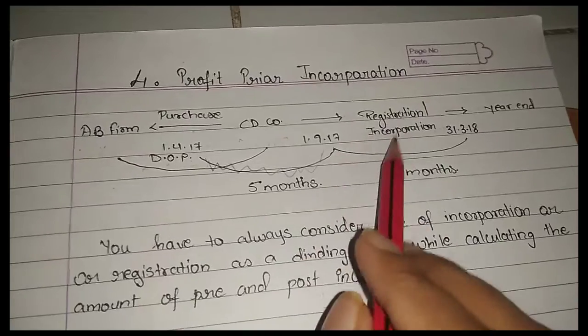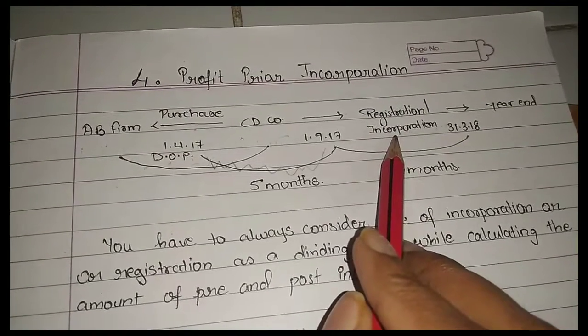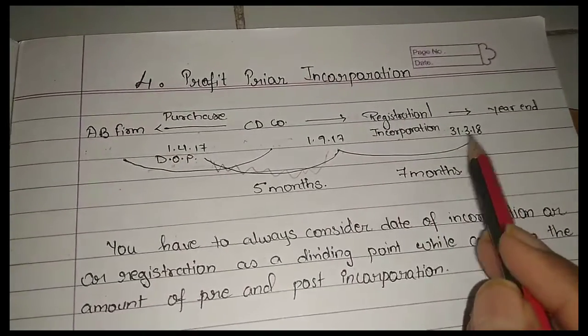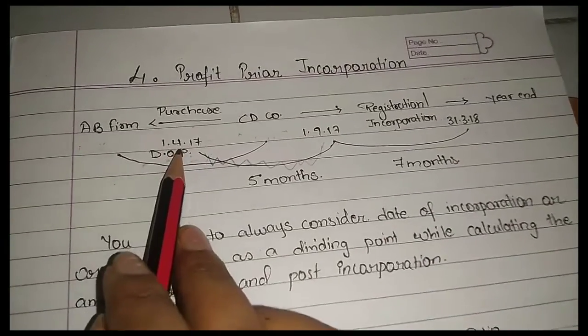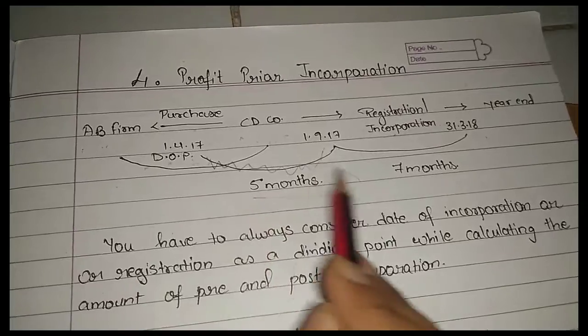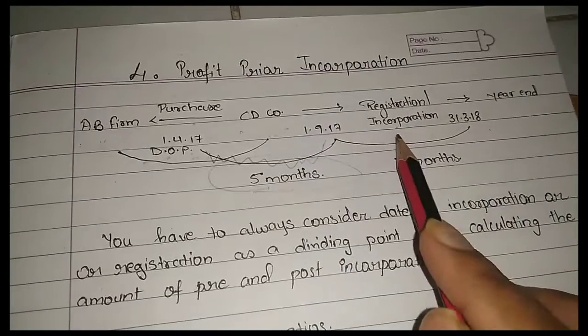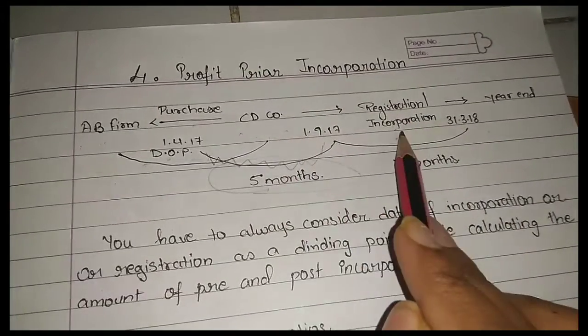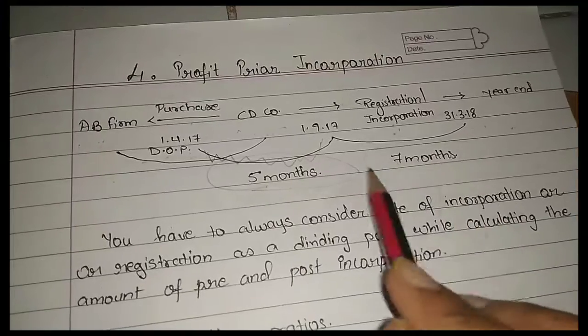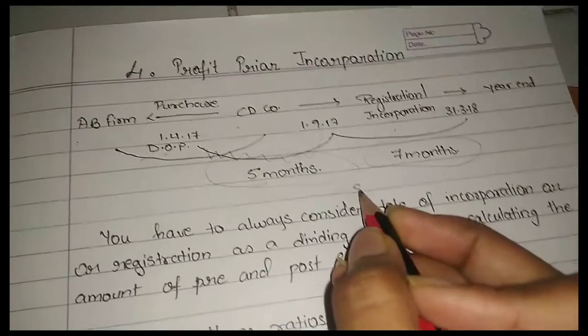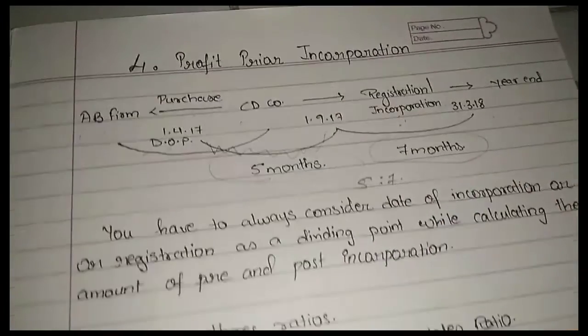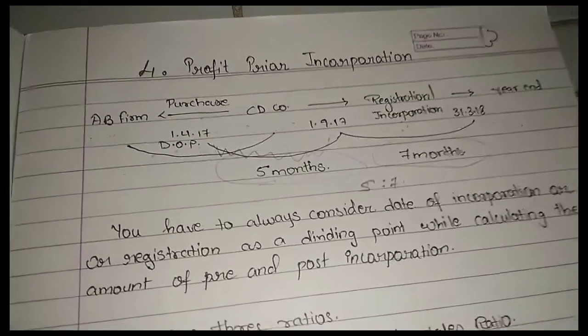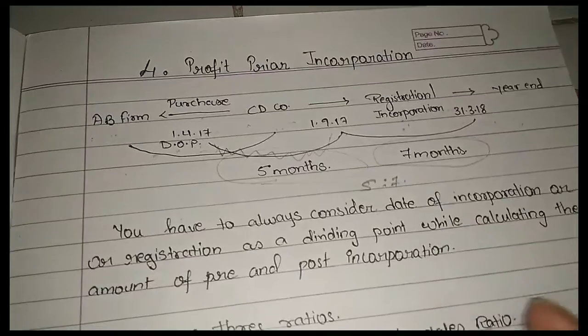So registration 19th May 2017, registration date or incorporation. Year end 31st March 2018. Now date of purchase to registration is 5 months, and registration to year end is 7 months.